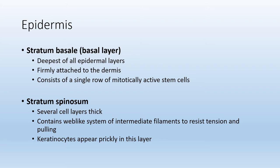The next layer, superficial to the stratum basale, is the stratum spinosum or the spiny layer. We call it the stratum spinosum because the primary cell found in the epidermis, the keratinocyte, begins to appear prickly or spiky in this layer. We will also see many filaments forming to resist tension and pulling throughout the skin.